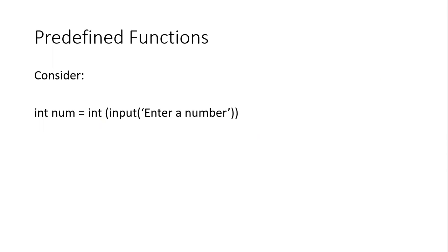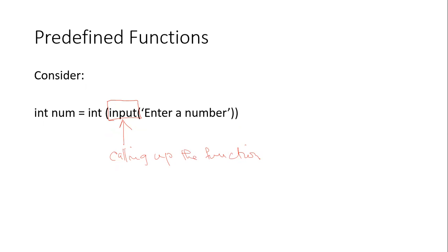Let's look at an example of a predefined function. We are all very familiar with the input statement — we called it the input statement, but this is actually a predefined function. We have not written the code for input; this code has already been written for us, and all we are doing is calling up the function. This is a typical example of a predefined function, and thinking about this, you'll find many different types of predefined functions that have been written for us.